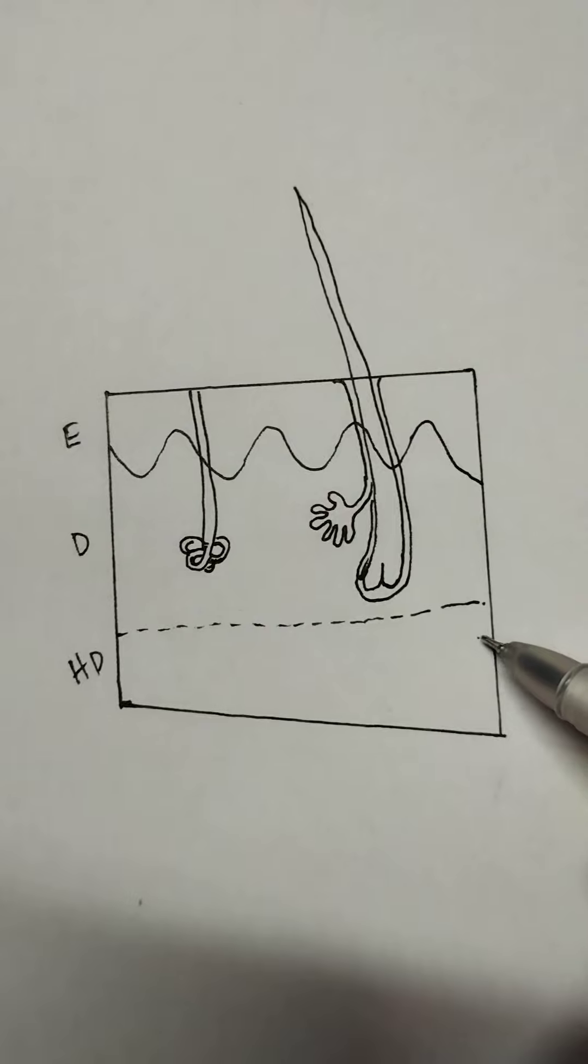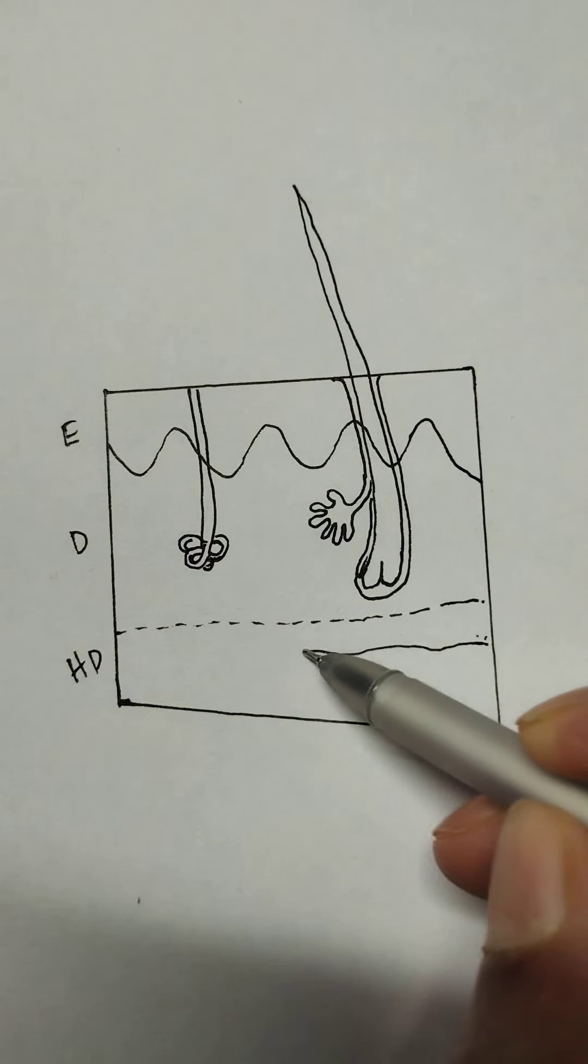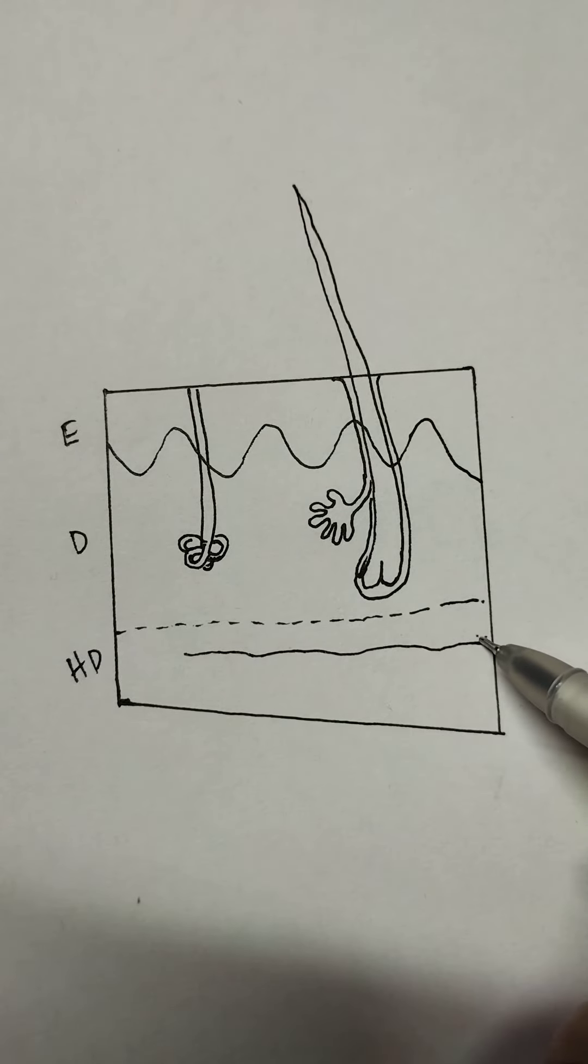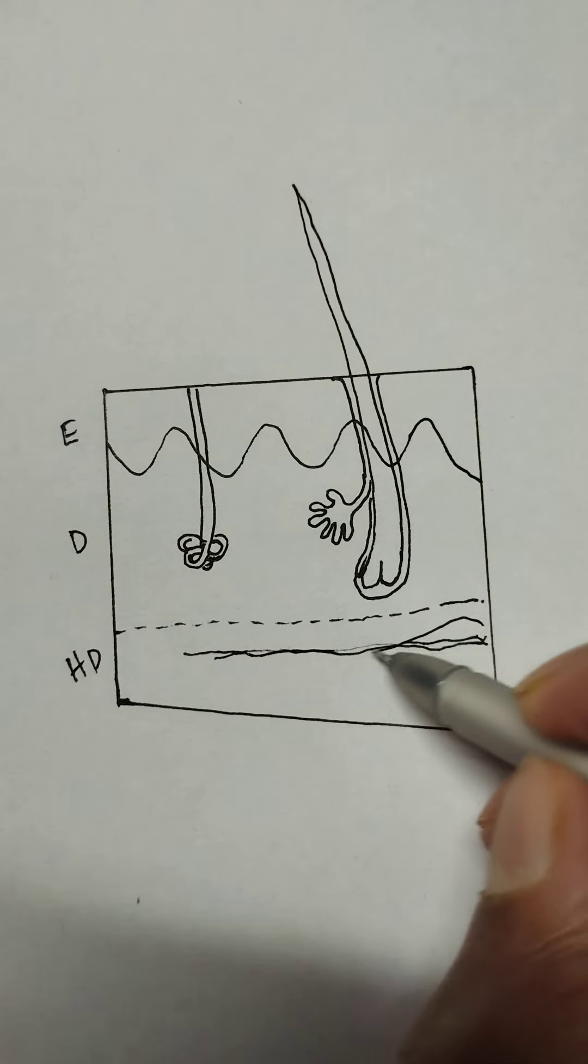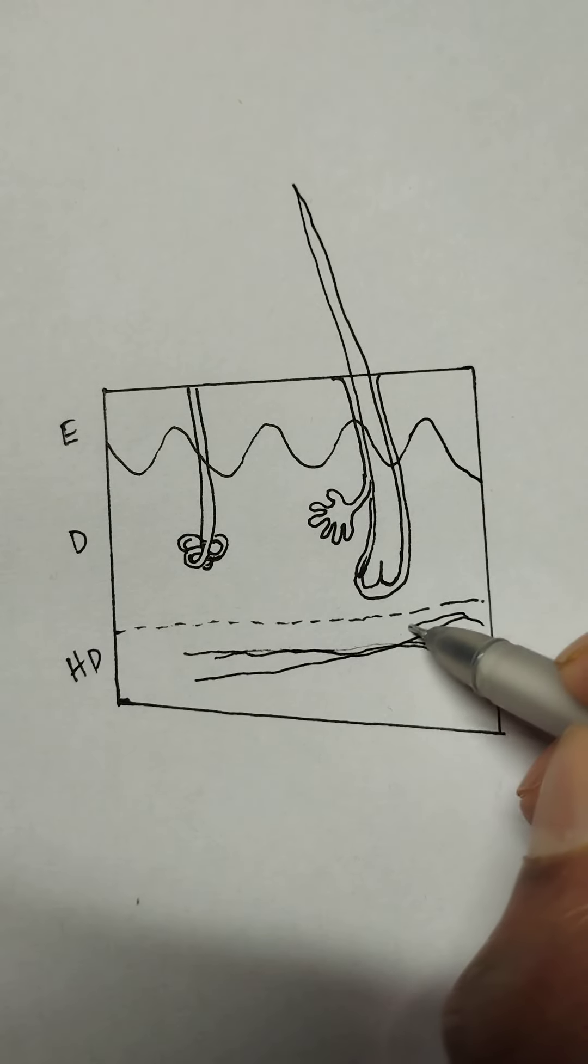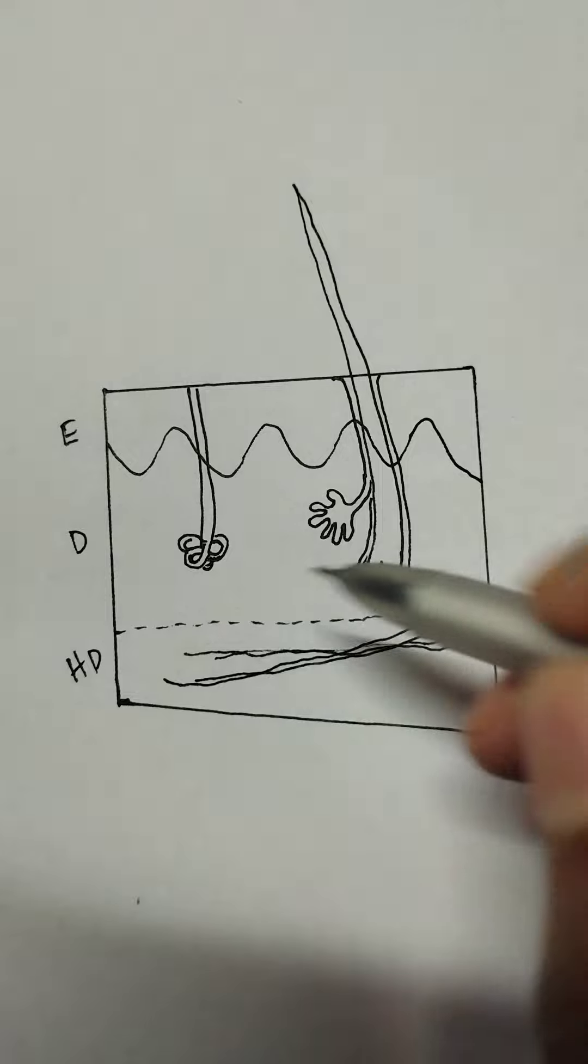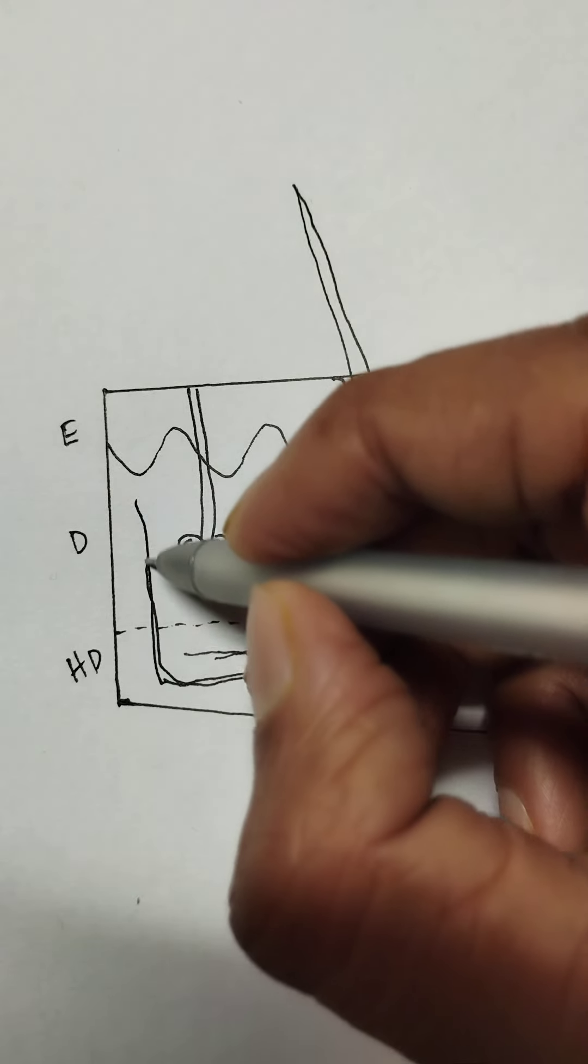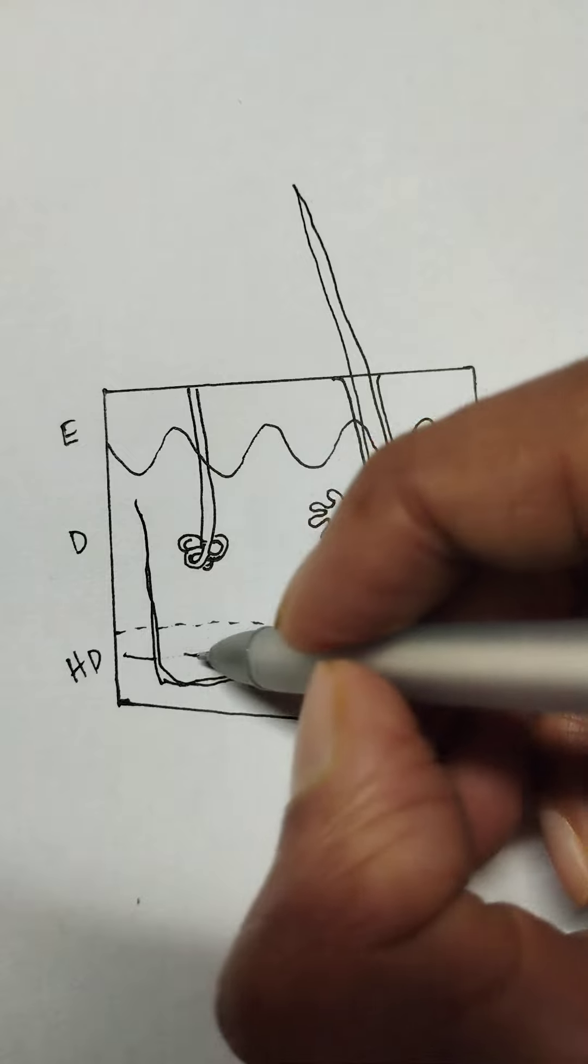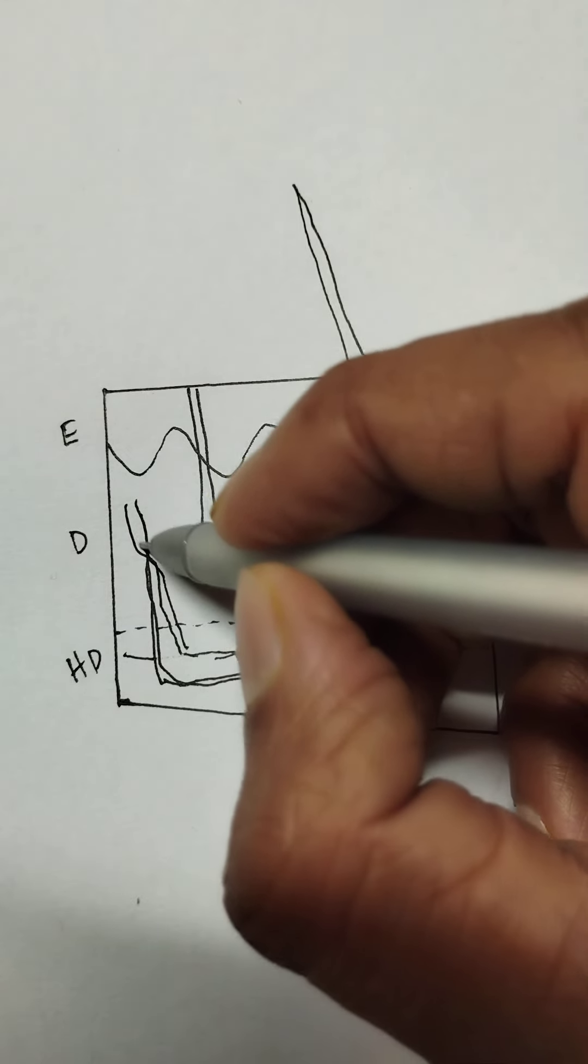We also have vessels running into the subcutaneous tissue. These are arteries and veins which supply the skin structures.